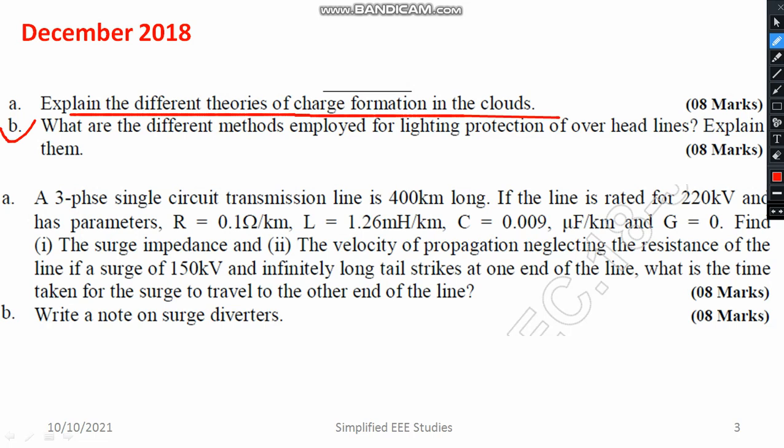There are different methods employed for lightning protection that you have to explain individually. Different methods like surge diverters, lightning arrestors, etc. At least you have to mention 4 methods. That is the thing which I mentioned — only 5 to 10% is remaining and I will be covering it as soon as possible. The weightage is 8 marks. Whenever you are explaining, you have to mention surge diverters.